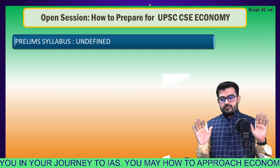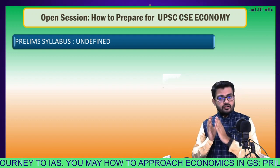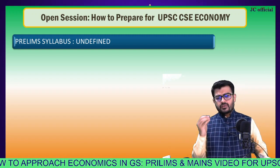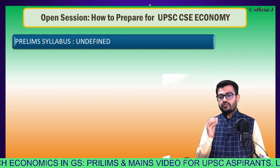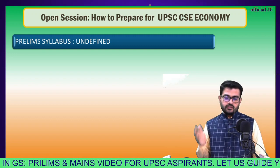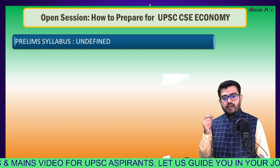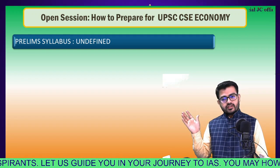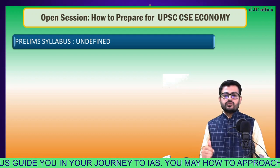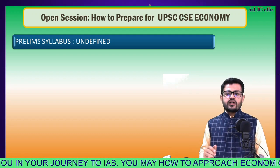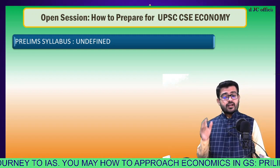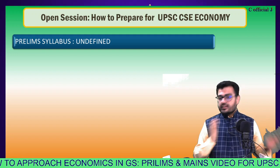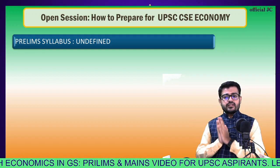That is why the prelims syllabus is called highly unpredictable — because they have to eliminate students. Almost 15 to 20 lakh applications are accepted by UPSC. Down the line, around 15,000 are asked to write mains, and out of those only around 2,000 to 3,000 are invited for the interview process. So it's an elimination process, and the competition is toughest at the prelims and interview level.